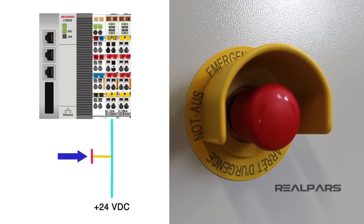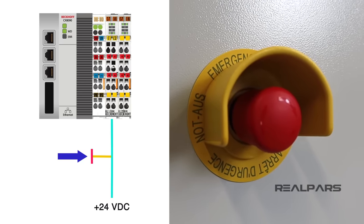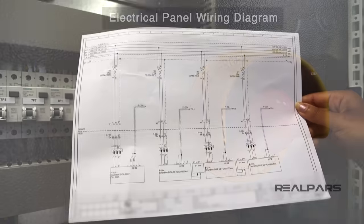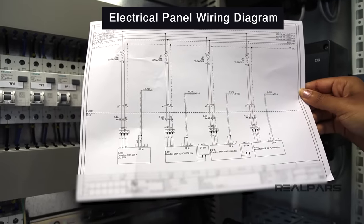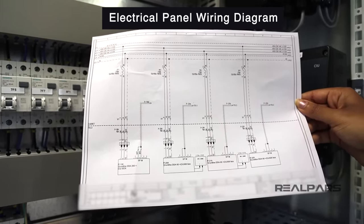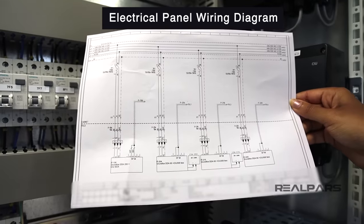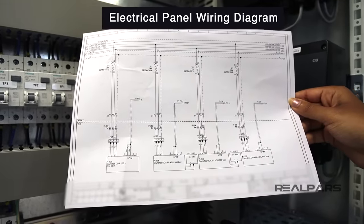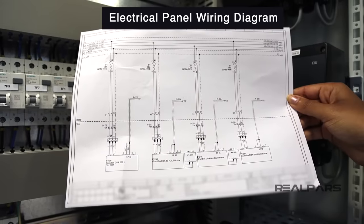Now, you may be curious how you should know which input on the PLC you should connect the emergency stop to. Well, this is simply done based on the wiring diagram that we have here. In a later video, I'll get into the details of the wiring diagram and show you how simple it is to read and carry out the wiring on this panel.